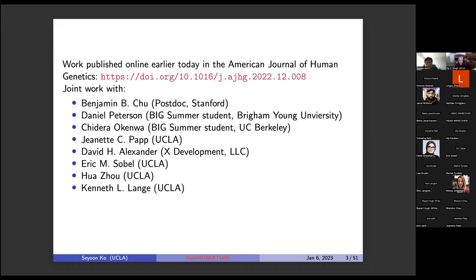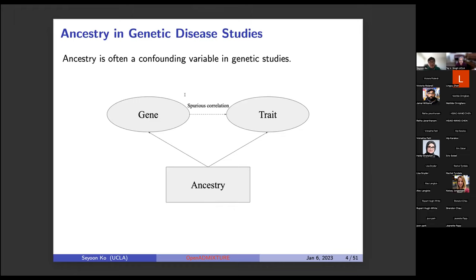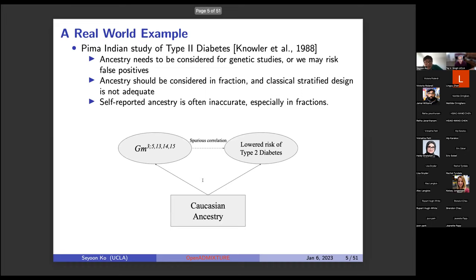This work was published online earlier today in the American Journal of Human Genetics. What we do is infer the ancestry of each individual, and why it is important is that ancestry is often a confounding factor in genetic studies. We may observe associations between genotypes and traits in many cases, but if we don't consider ancestry, the correlation might be spurious.